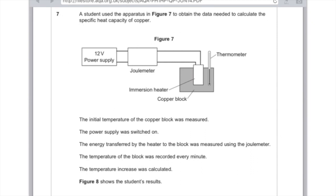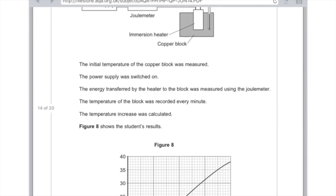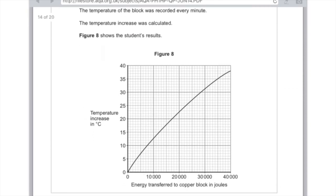A student used the apparatus in figure seven to obtain data needed to calculate the specific heat capacity of copper. The initial temperature of the copper block was measured, the power supply was switched on, energy transferred by the heater was measured using the joule meter, the temperature was recorded every minute, and the temperature increase was calculated.